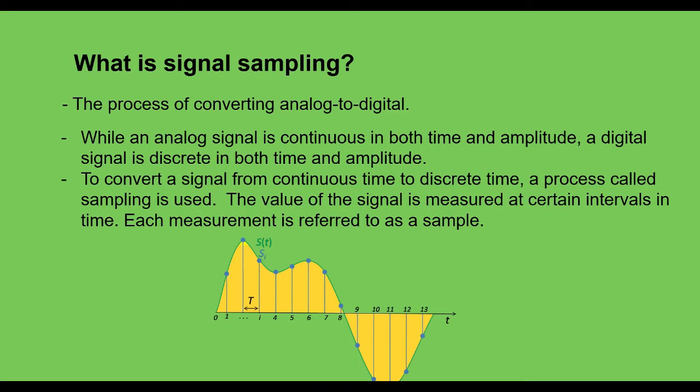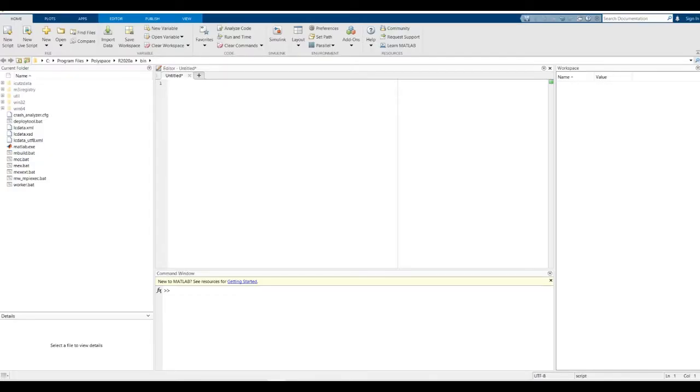In this video we will talk about signal sampling. In signal processing, sampling is the reduction of a continuous time signal to a discrete time signal. I will show you how a continuous time signal can be represented by its samples and recovered back when the sampling frequency is greater than or equal to twice the highest frequency component of the message signal.